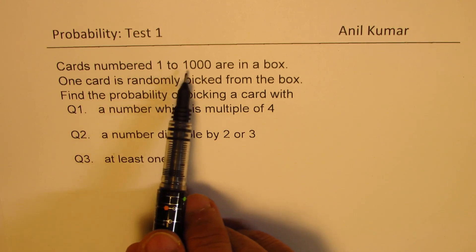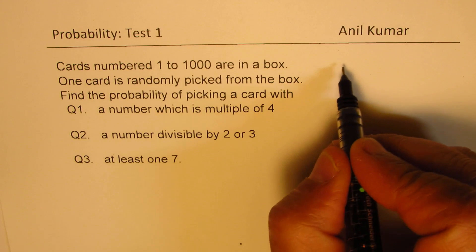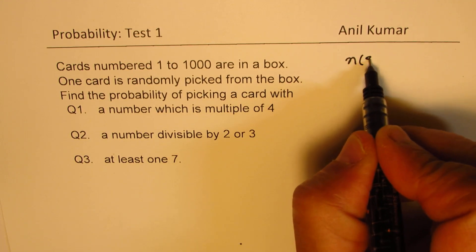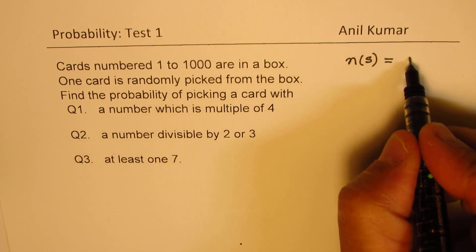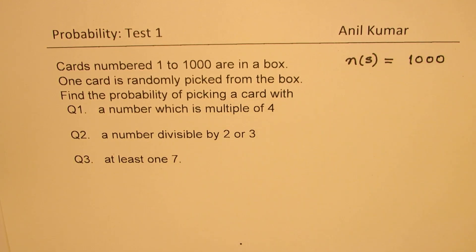So we know that there are 1000 cards, 1 to 1000. So in our sample space, whenever you are picking, there are 1000 cards. So there are 1000 items in our sample space.